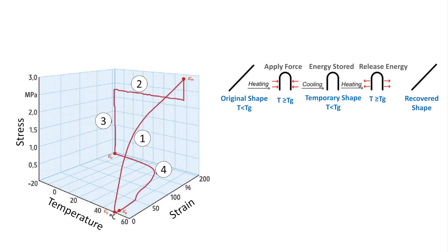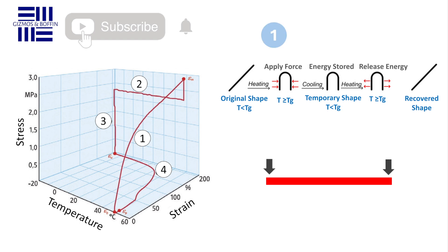Let's look at how a typical thermally activated shape memory cycle works. First, the material is in its original shape at room temperature. It is then heated above its glass transition temperature, making it soft and deformable. While in this heated state, an external force is applied to deform it into a temporary shape.